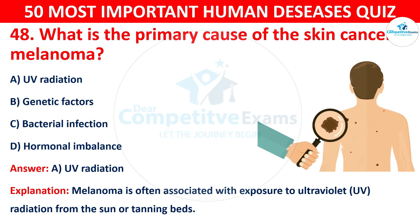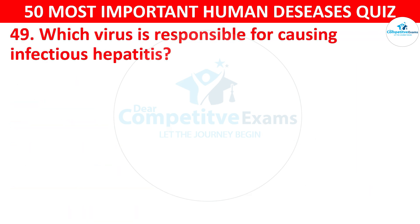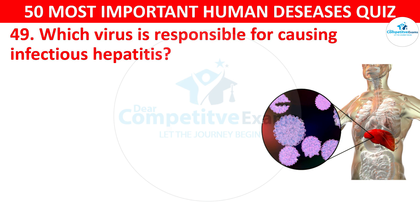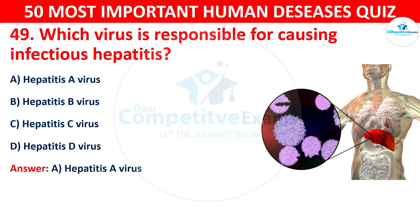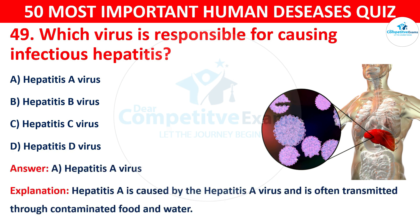Question 49: Which virus is responsible for causing infectious hepatitis? The options are: A) Hepatitis A virus, B) Hepatitis B virus, C) Hepatitis C virus, or D) Hepatitis D virus. The correct answer is A — Hepatitis A virus. Hepatitis A is caused by the Hepatitis A virus and is often transmitted through contaminated food and water.